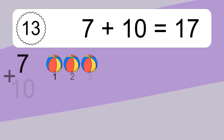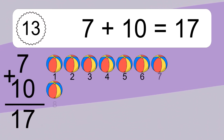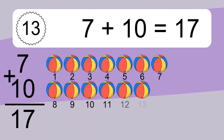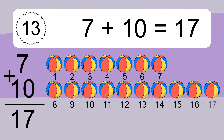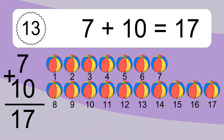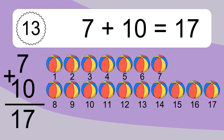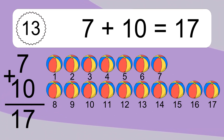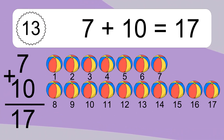7 plus 10 equals 17. Let's count it. 1, 2, 3, 4, 5, 6, 7, 8, 9, 10, 11, 12, 13, 14, 15, 16, 17.